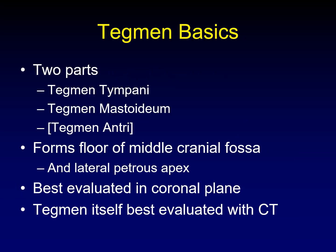The tegman comes in two parts: the tegman tympani, which is over the tympanic cavity, and the tegman mastoidium, which is over the mastoid air cells. If you want to get technical, there's also a tegman antri, which lies over the mastoid antrum, but I almost never use that term — I just lump it in with the tegman mastoidium.